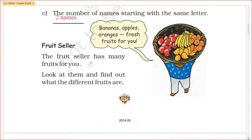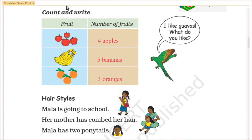Fruit seller. The fruit seller has many fruits for you. Look at them and find out what the different fruits are. Let's see how many fruits there are. The fruits are bananas, apples, oranges, and fresh fruits for you. Count and write: this is the number of fruits, this is the number of apples, this is the number of bananas, and that is the number of oranges.